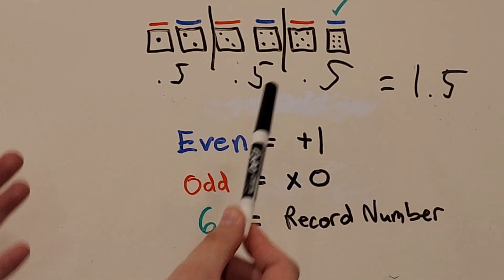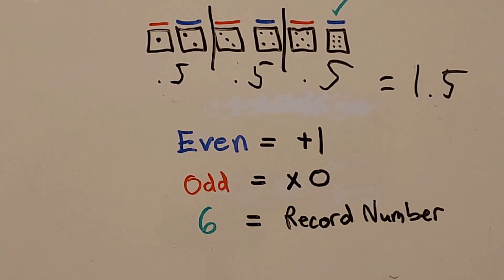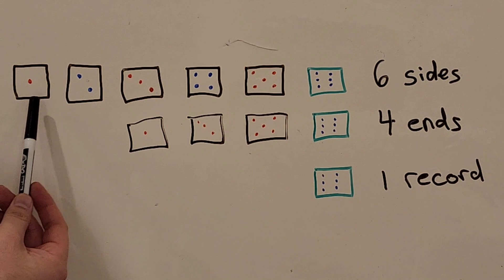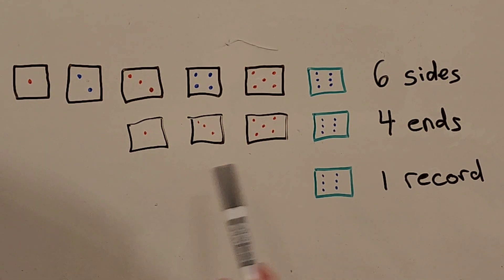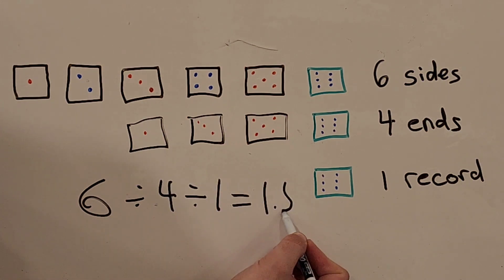So to understand it in a simpler format, we need to find another way to come up with this answer. So the problem is we have six sides of the die. We have four sides that end the sequence, and one of the sides that we record. Six divided by four divided by one equals 1.5.